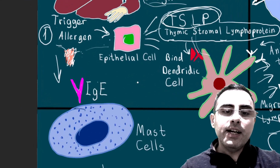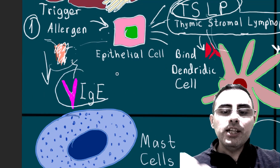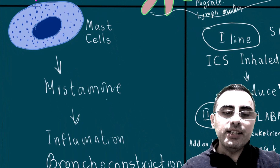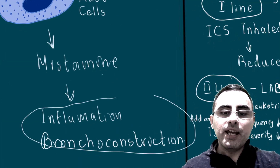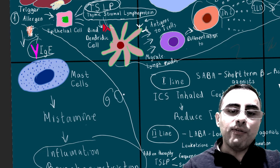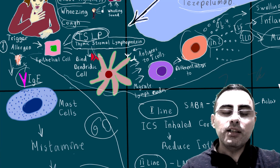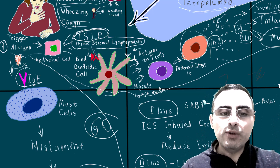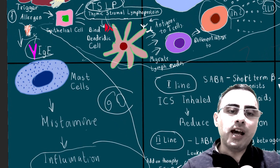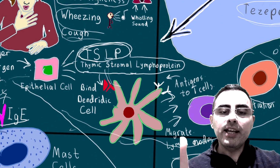The second pathway is when an allergen directly binds to IgE, and IgE causes activation of mast cells. Mast cells release histamine, which causes inflammation and bronchoconstriction. This is the allergic type of asthma, accounting for about 60% of cases. However, even in allergic-type asthma, both the IgE pathway and the TSLP/dendritic cell pathway are used.